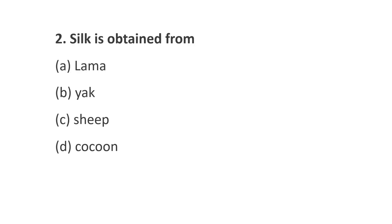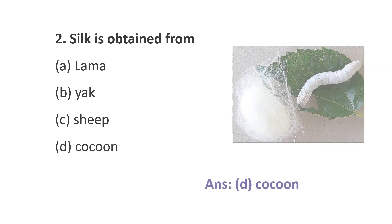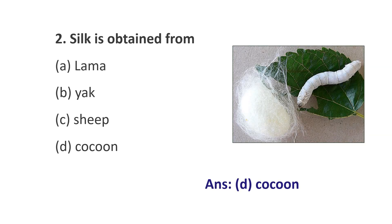Question number 2. Silk is obtained from: Option A, Lama; Option B, York; Option C, Sheep; Option D, Cocoon. The answer is Option D, Cocoon. Silk is obtained from the cocoon.